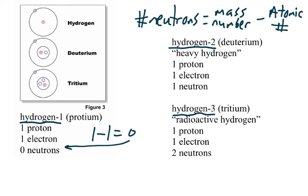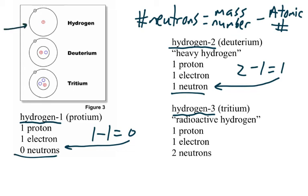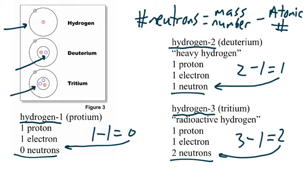Hydrogen-1 is the only element that has no neutrons at all. Then for hydrogen-2, the mass number minus the atomic number gives you one neutron. Notice the neutrons are different. You can also see it in the picture — no neutrons in hydrogen-1. Look at the nucleus, where the neutron would be found, represented here by the blue. For hydrogen-3, the mass number minus the atomic number gives two neutrons, and you can see the two blue ones right there.